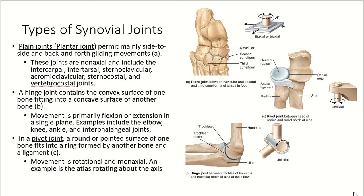A pivot joint has a round or pointed surface of one bone — like the head of the radius — fitting into a ring formed by either another bone or a ligament. Here we have the articular ligament forming the joint between the radius and ulna. Movement of this joint is rotational and monoaxial. A great example is the atlas, the first vertebra of the vertebral column, rotating on its axis.